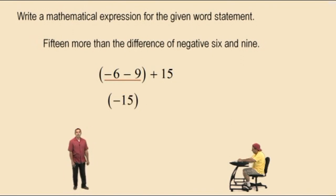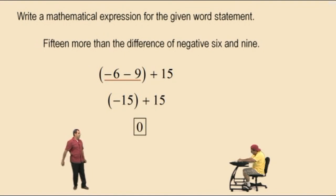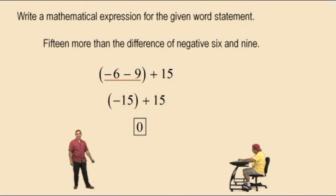What's negative 15 plus 15? Those are additive inverses — opposites of each other — and when you sum those together you get zero. Very nice, Charlie. That was a good lecture. Let's take a break, and we'll see you all again soon.